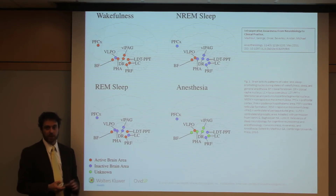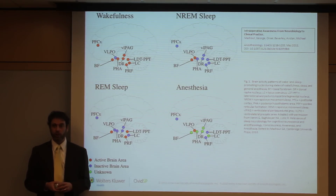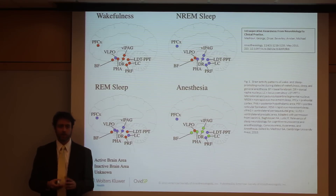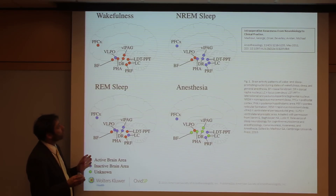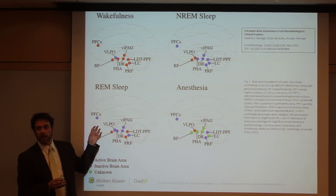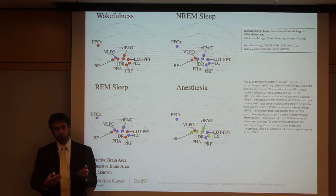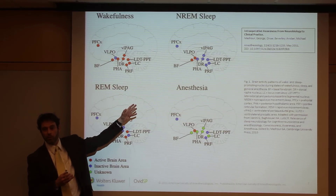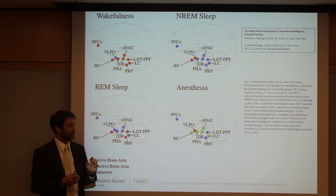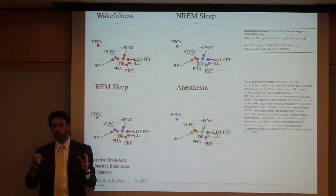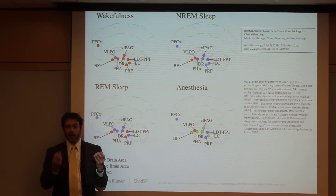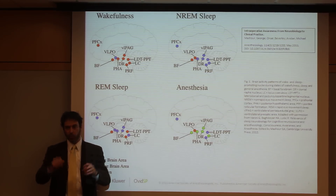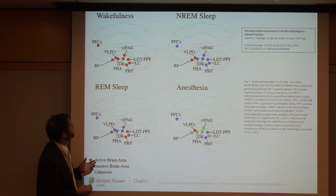Let me start with this figure, which is in the article by Meshur, Orser, and Avedan. This is from work done by Ralph Leidig and Helen Bagdoyen at the University of Michigan. What's shown here are different nuclei that are involved in arousal states and also in sleep promotion. We know more about wakefulness and non-REM sleep than we know about anesthetic sleep and REM sleep. Arousal and sleep promotion are critically dependent on nuclei in subcortical areas like the hypothalamus, the pons, and the brainstem in general.